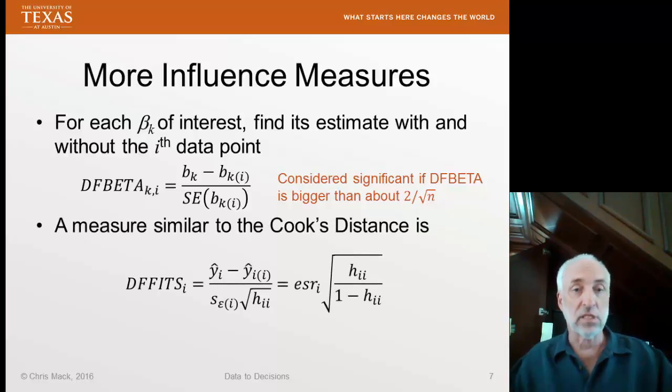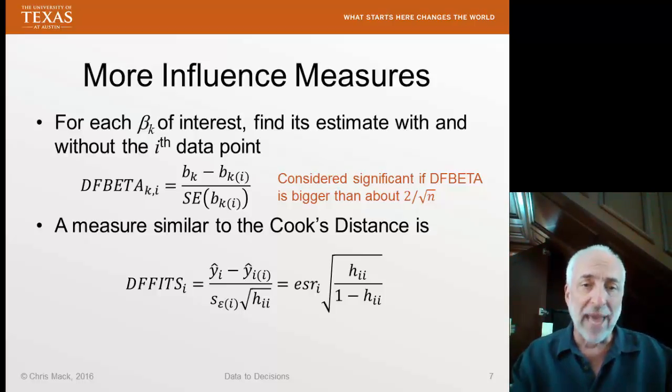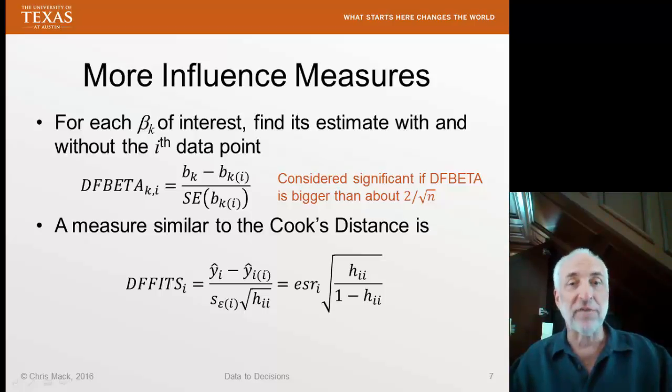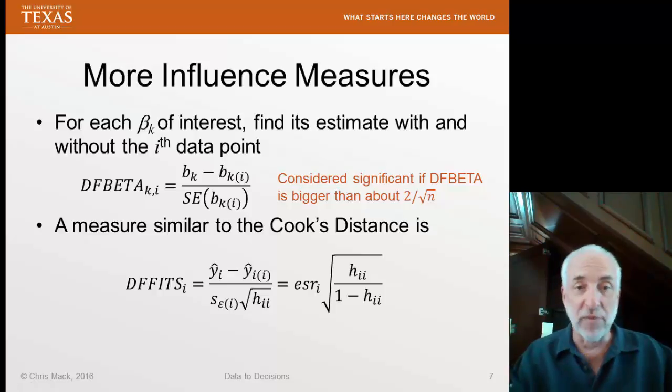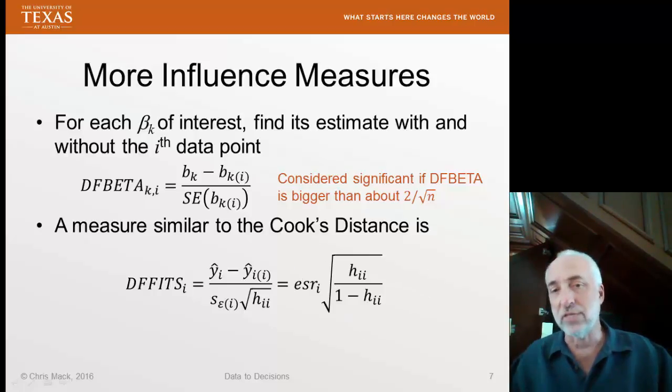Another measure, like the Cook's distance, is the DF fits. This is what happens to the i-th prediction if the i-th data point is removed. So the i-th predicted value with the i-th data point removed is then normalized by, divided by the standard error of the i-th residual. And we get this DF fits. Now, another way of calculating that, it simplifies to the externally studentized residual multiplied by the square root of HII over 1 minus HII.